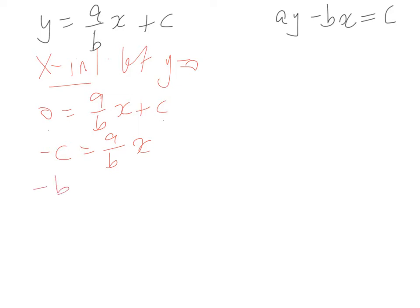Negative bc equals ax. And divide by a. Negative bc over a equals x. So there's our x-intercept.